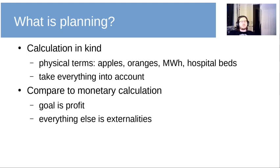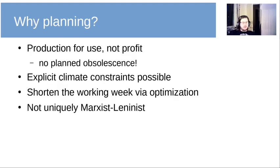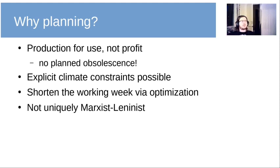We can compare this to monetary calculation, where the goal is just profit, and everything that isn't profit is externalities. We might also ask ourselves why we want to do planning. One reason is that in planning we can do production for use rather than profit, which means we can make stuff that lasts a long time — we can get rid of stuff like planned obsolescence. We can also put in explicit climate constraints, saying we want the amount of carbon dioxide by 2050 to be below a certain level, and be relatively certain that this would be the case.